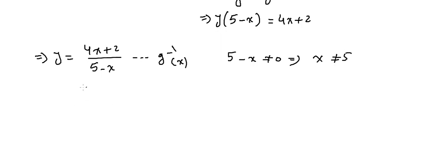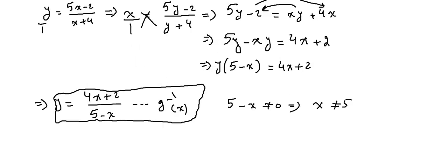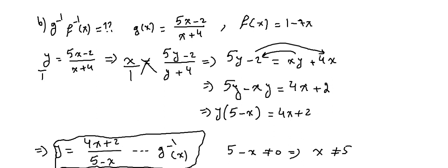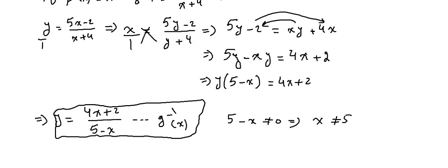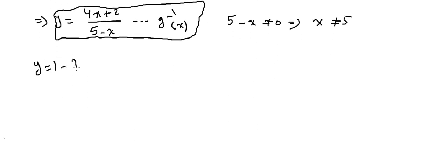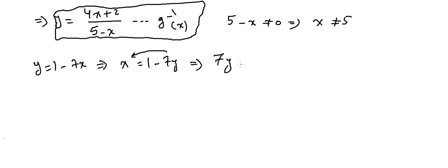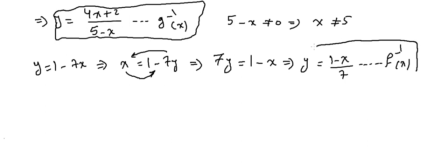Now we find f inverse. f(x) = 1 minus 7x, so y = 1 minus 7x. Interchange x and y: x = 1 minus 7y. Solving for y: 7y = 1 minus x, so y = (1 minus x) over 7. Therefore f⁻¹(x) = (1 minus x) over 7.